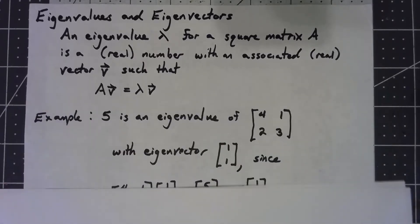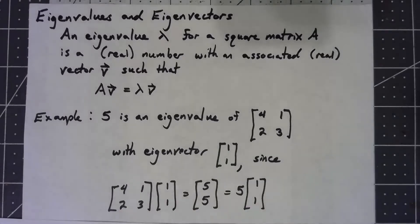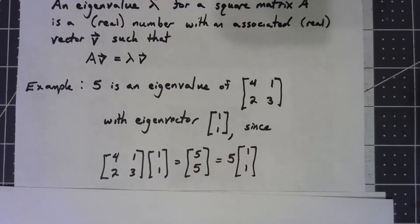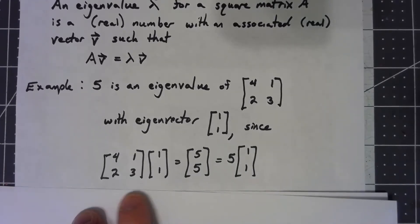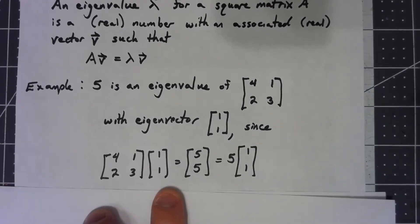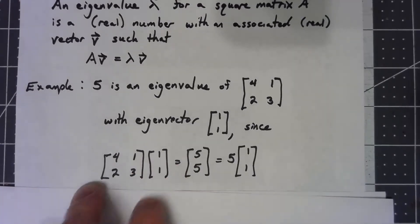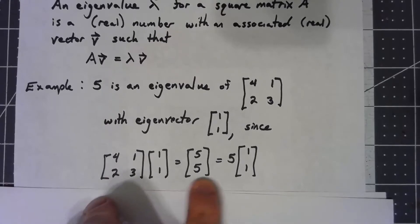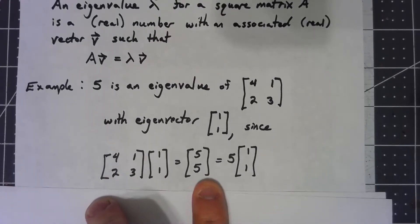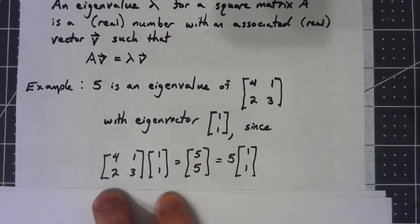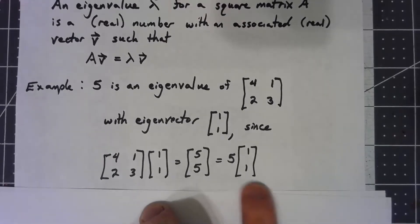A simple example: let's say we've got matrix [4, 1; 2, 3] and 5 is an eigenvalue of that with the eigenvector [1, 1]. Why? Because if we take the matrix times [1, 1]: 4 times 1 plus 1 times 1 gives us 5, and 2 times 1 plus 3 times 1 gives us 5. So multiplying by that matrix gives the same result as taking 5 times [1, 1].